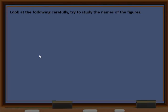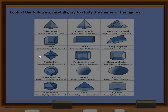Look at the following carefully. Try to study the names of the figures. Here we have different types of figures. The first is a tetrahedron. The second is a square pyramid — it has four faces, six edges, and four vertices. The third is also a square pyramid with faces five, edges eight, vertices five. The next is a hexagonal pyramid.